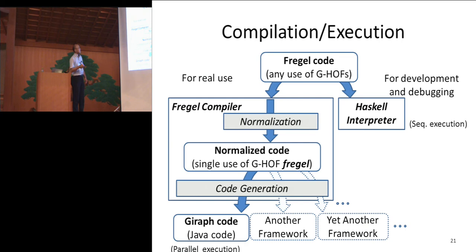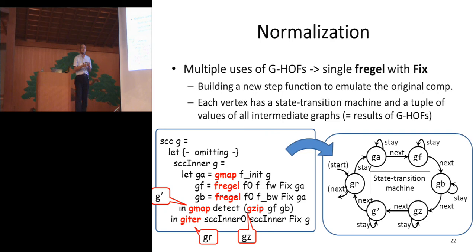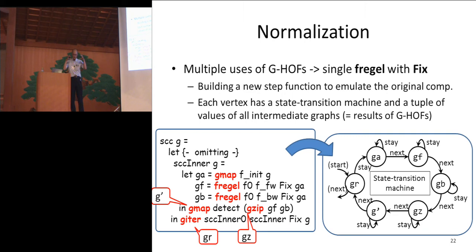The normalization flattens the multiple uses of graph higher-order functions into a single use of the Fregel function. This is done by making a new step function to emulate the original computation, building a state transition machine that emulates the structure of the computation. For example, if you find six graph higher-order functions, corresponding to these six uses, the state machine has six states. The compiler builds this state transition machine and embeds it as vertex data, and each vertex emulates the computation.